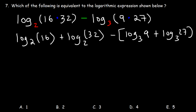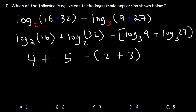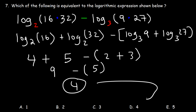Log base 2 of 16: two to the fourth power is 16, so that's 4. You can also type log 16 divided by log 2 in your calculator to get 4. Two to the fifth power is 32, so log base 2 of 32 is 5. Three squared is 9, so log base 3 of 9 is 2. Log base 3 of 27 is 3 because 3 to the third power is 27. So 4 plus 5 is 9, 2 plus 3 is 5, and 9 minus 5 is 4. Therefore D is the right answer.